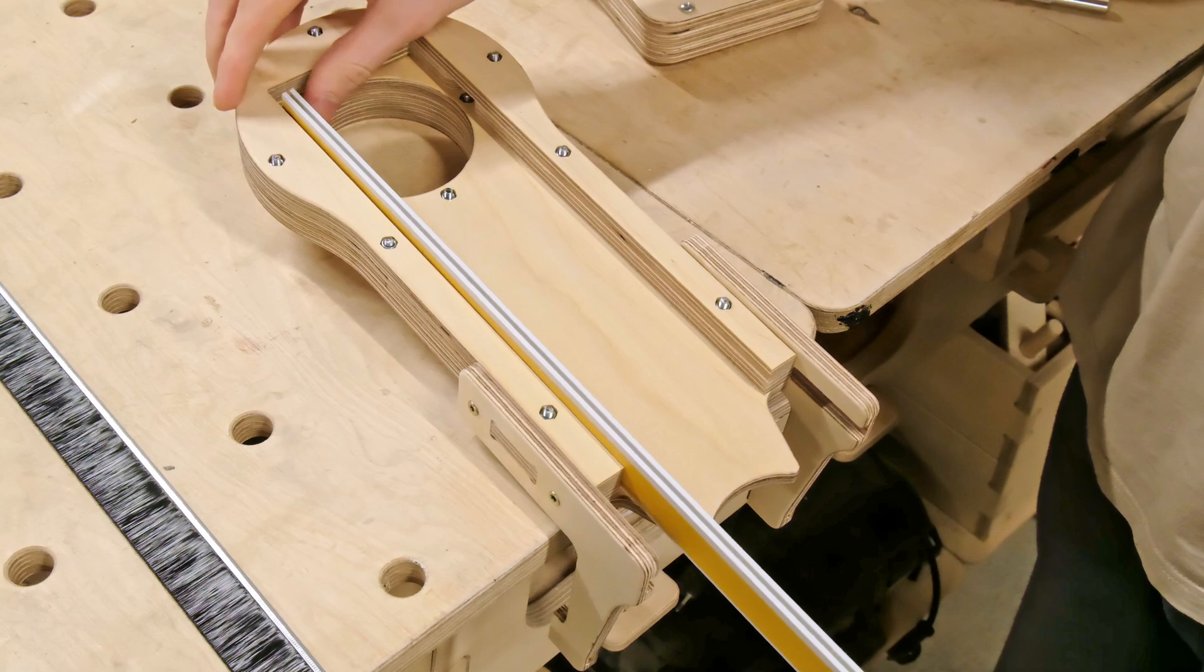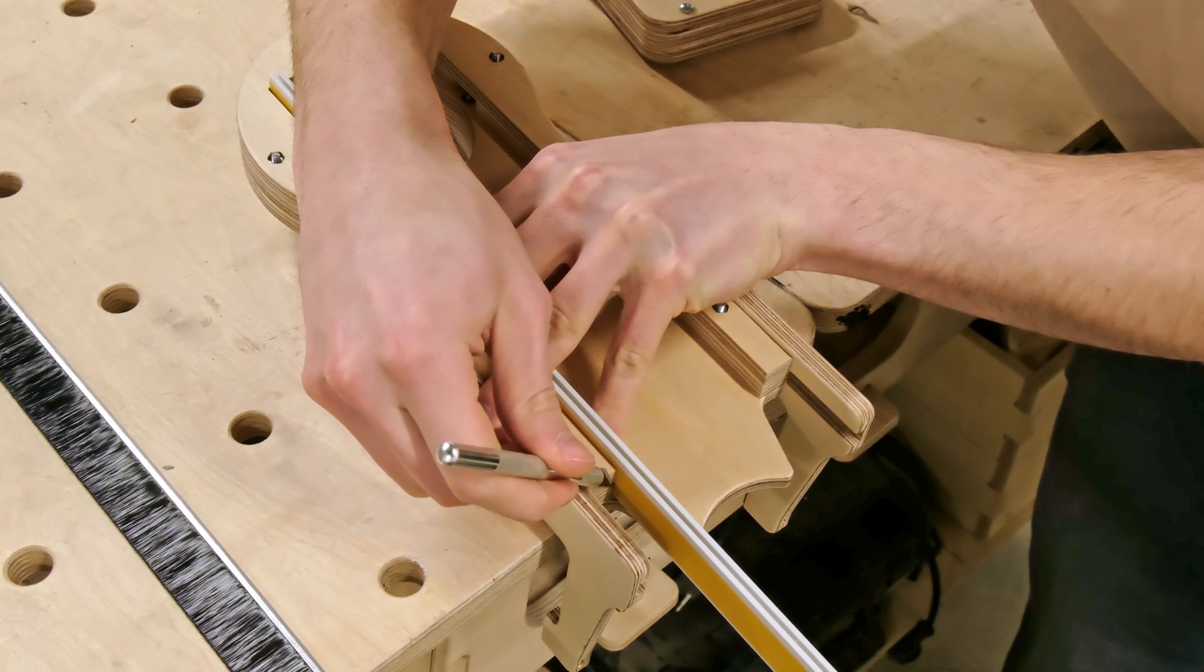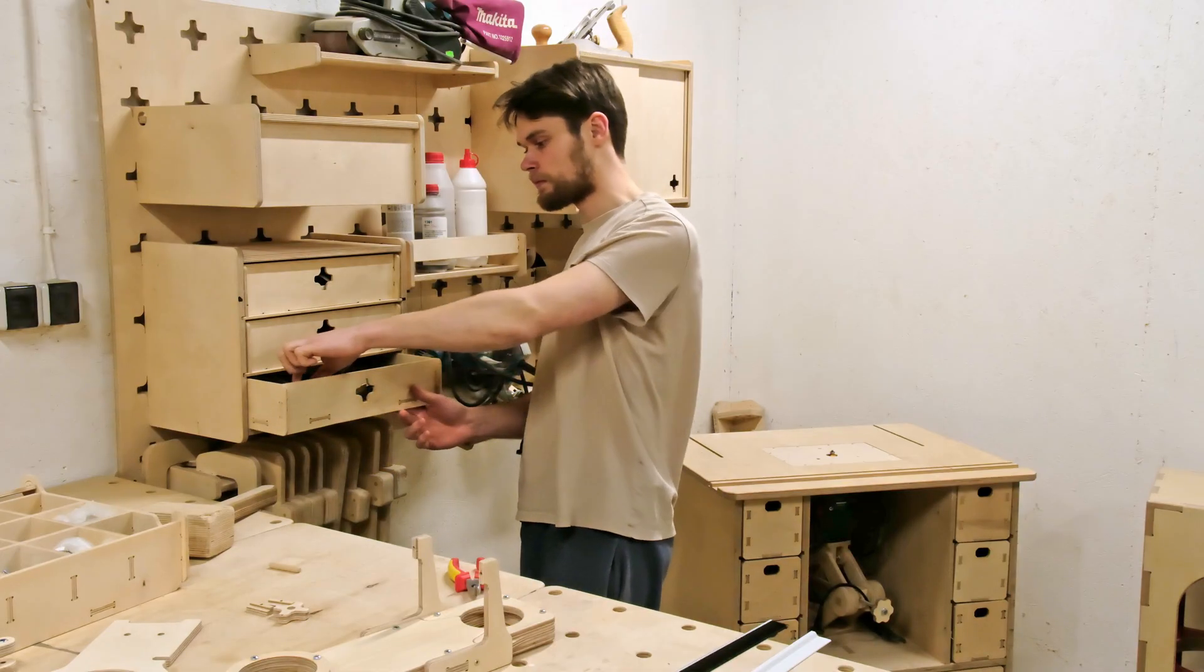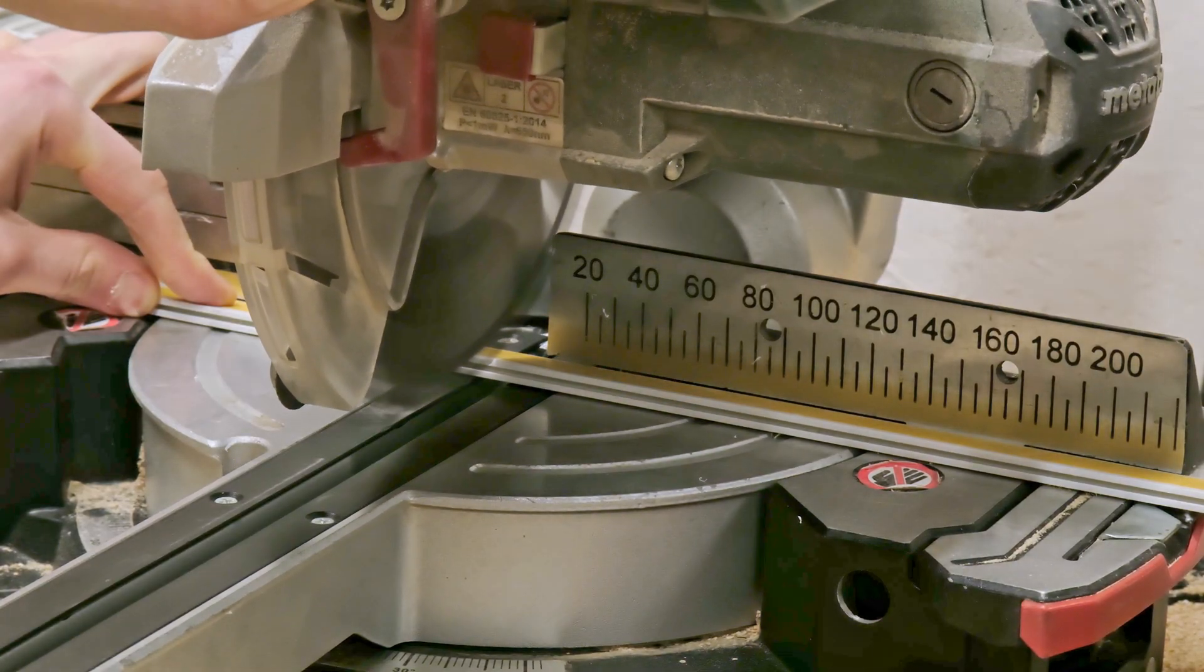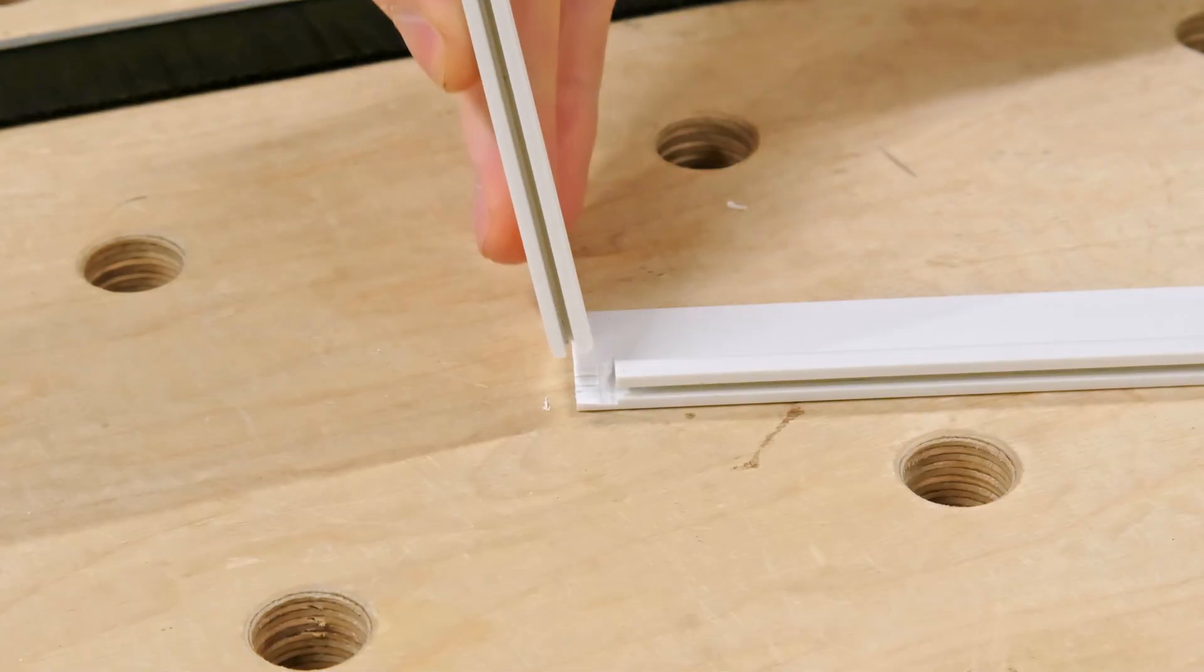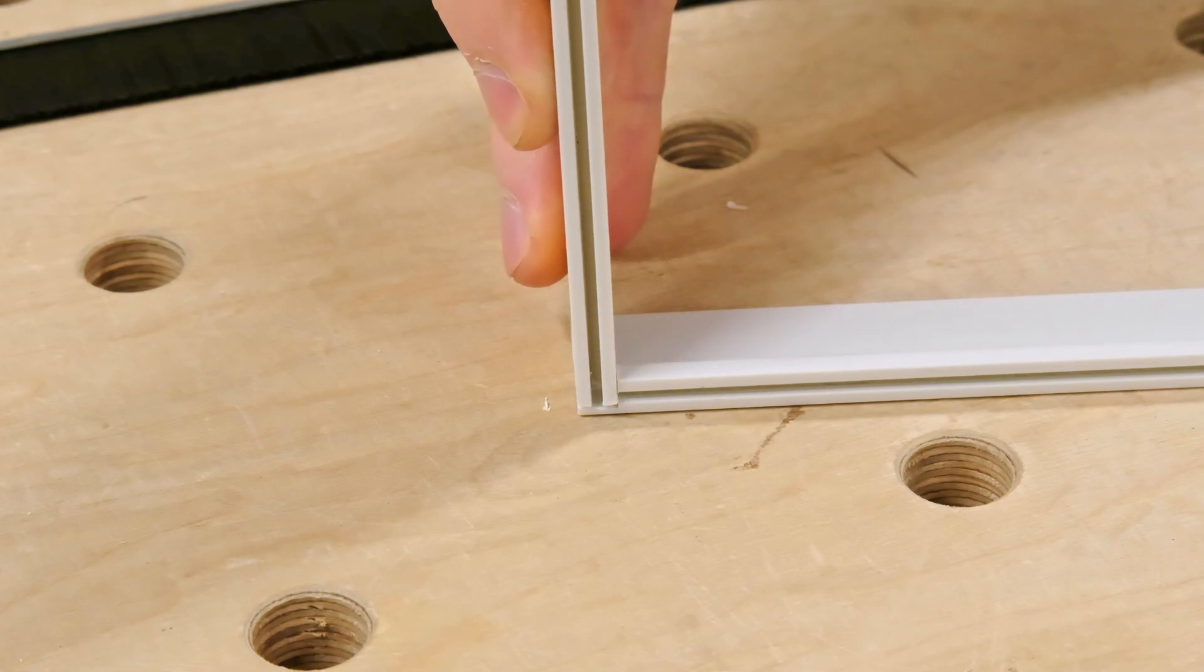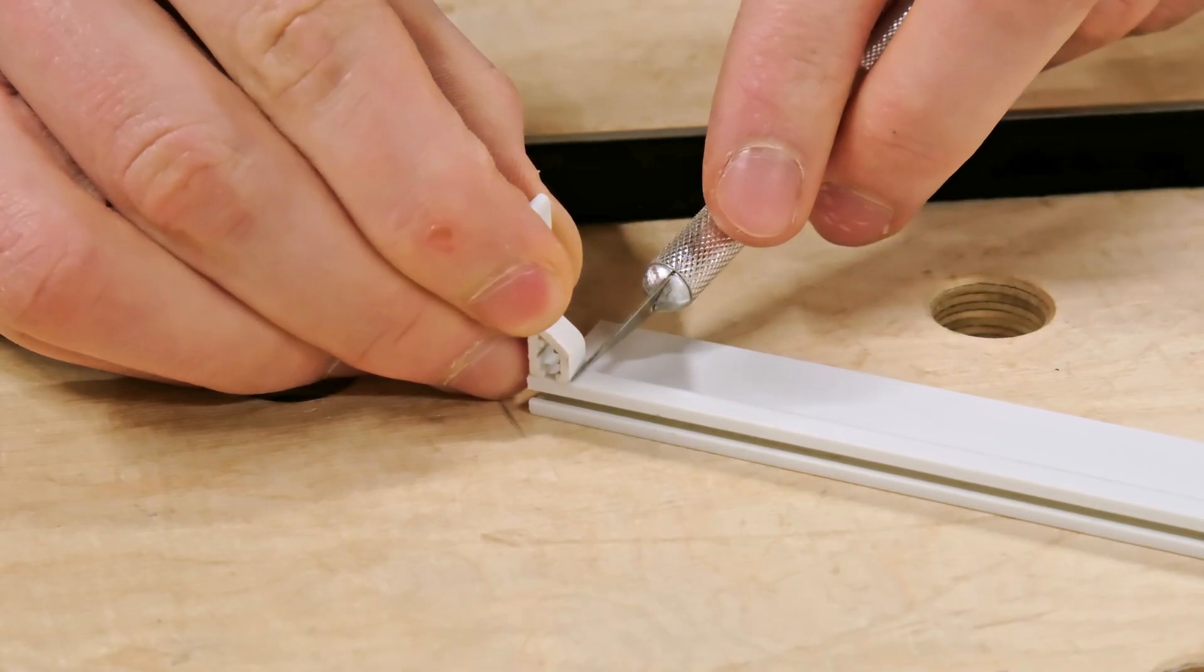So without much hesitation, I'm marking the length of the profile by placing them inside the dust shoe, making the markings with a knife and then doing the necessary cuts on the miter saw. To ensure the brushes will meet in the corners, we have to cut a little bit of the profile at the ends of the dust shoe.